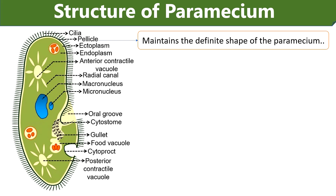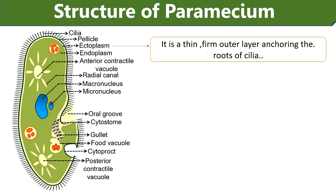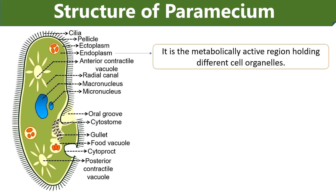Cytoplasm: Cytoplasm comprises two distinct areas, ectoplasm and endoplasm. Ectoplasm is a thin, firm outer layer anchoring the roots of cilia, and it consists of trichocyst and fibrillar components. Endoplasm is the metabolically active region holding different cell organelles. It consists of mitochondria, endoplasmic reticulum, ribosomes, Golgi bodies and lysosomes.